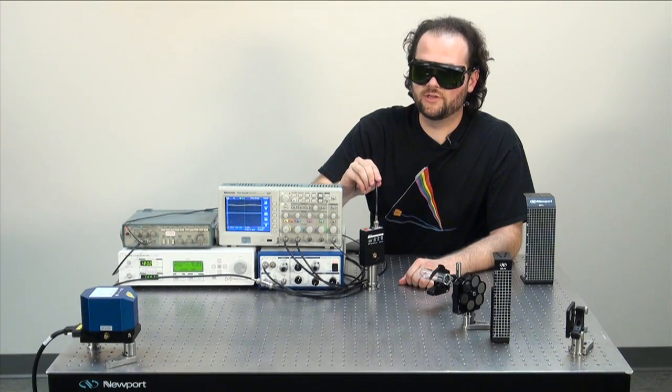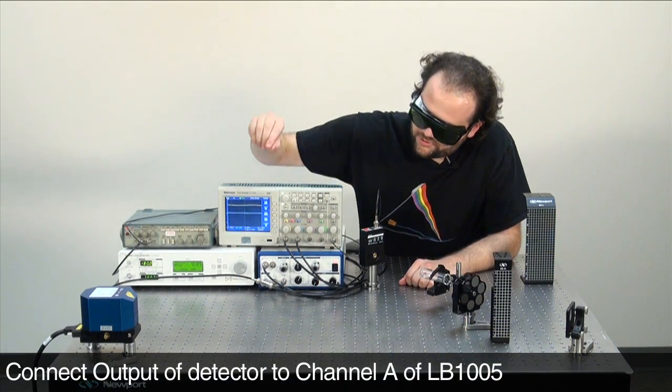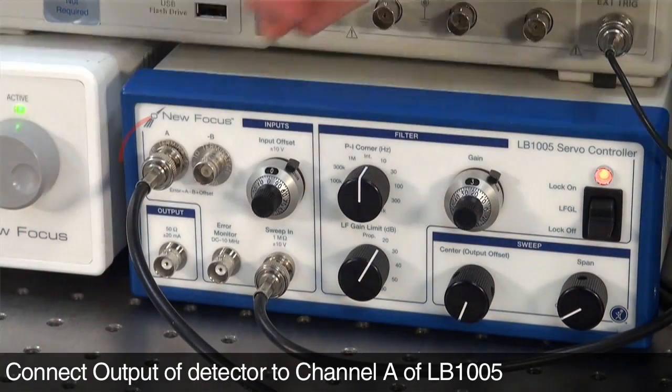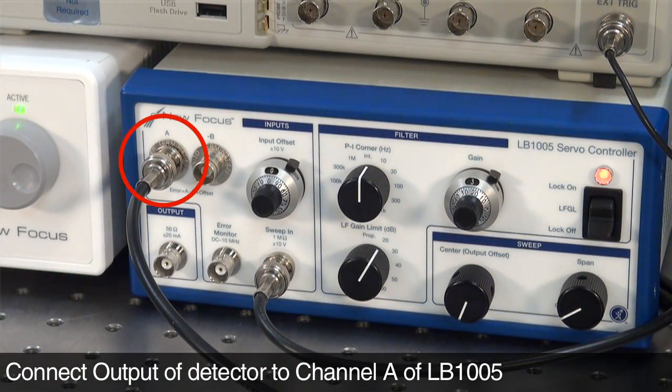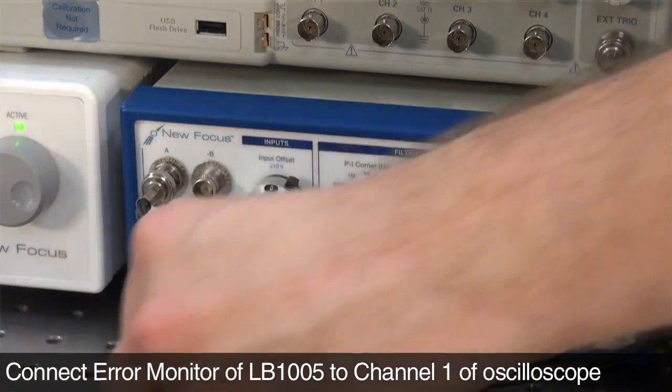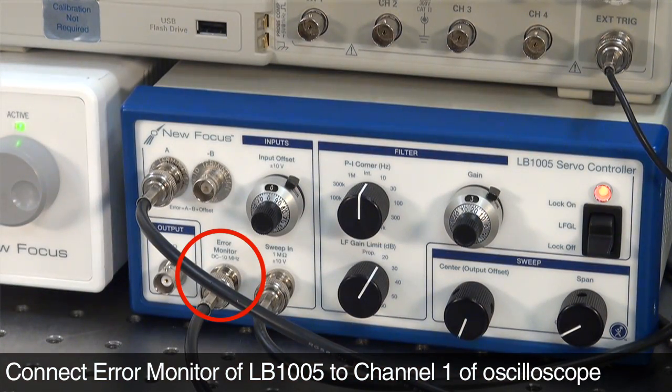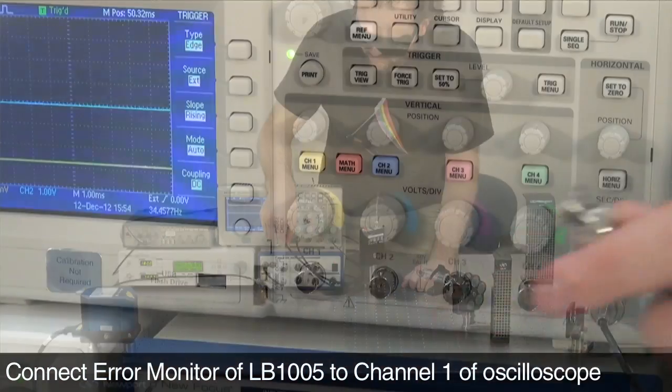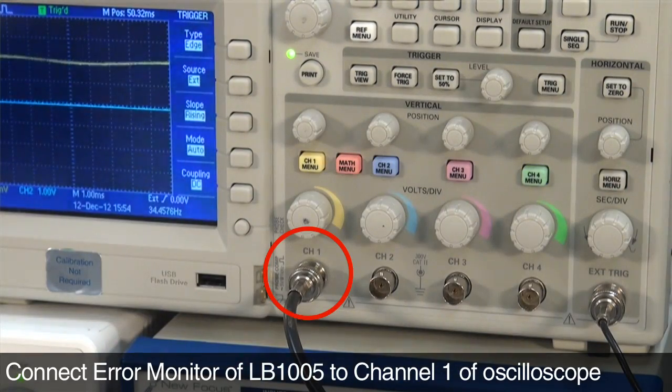Next, the output of your detector will go to channel A of the lockbox. Then, take the error monitor of your lockbox and plug it into channel 1 of your oscilloscope.